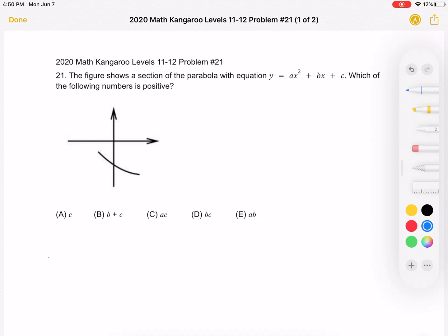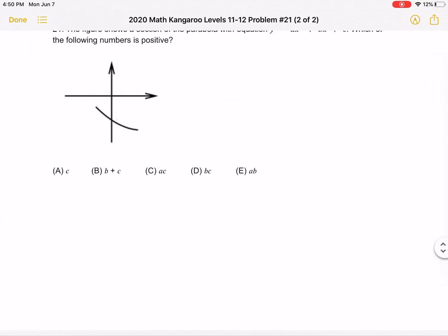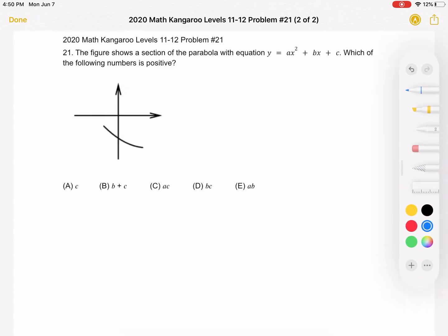This is the problem as it originally appeared on the test, and here is where we'll be going over the solution. To start, we want to try to figure out whether a, b, and c are each positive or negative, and then we can determine whether their various sums and products are positive or negative.